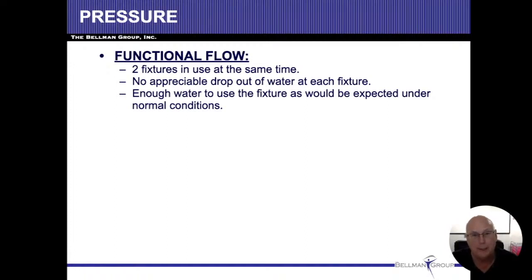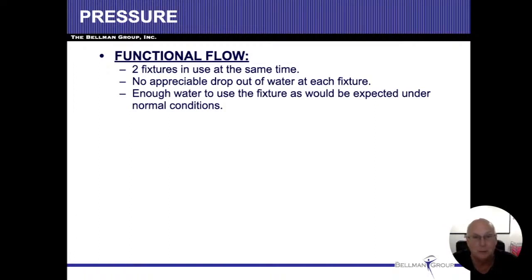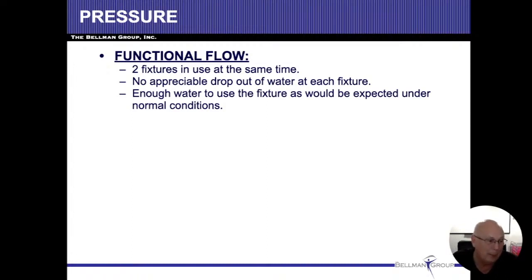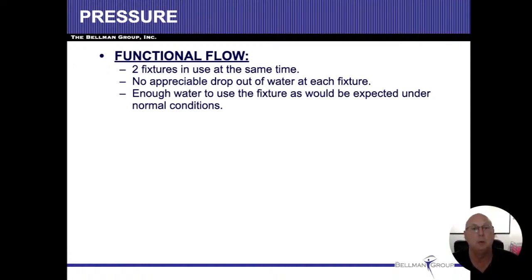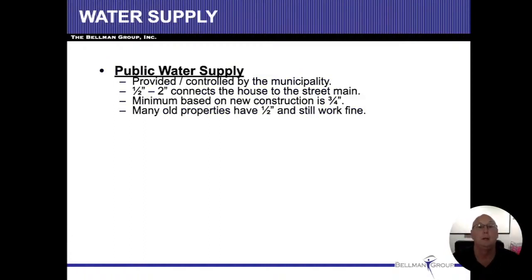We had galvanized pipes, and they were corroded up where the hot water wasn't flowing. I didn't recognize that because I had the hot and cold water running at the same time. So now our process is we run the hot water only in the shower, run the hot water in the sink and see if it makes a difference between the two. Then we do the same thing with the cold water and flush the toilet with the cold water. Whenever there is low water flow, make sure clients are aware of it. Re-piping houses isn't really a cheap thing to do. Functional flow: two fixtures in the same room, in use at the same time, without any significant drop from either one.